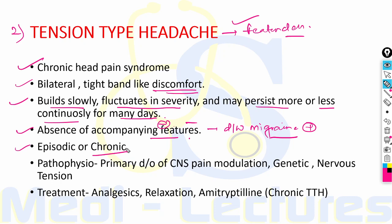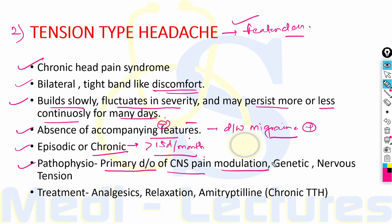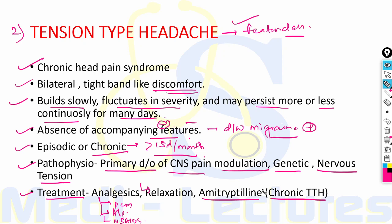Tension type headache can be episodic or chronic; chronic if present for more than 15 days per month. The pathophysiology is incompletely understood, but it is a primary disorder of CNS pain modulation alone, unlike migraine which has a more generalized disturbance of sensory modulation. It has some genetic contribution. Treatment involves basic analgesics like paracetamol, aspirin and other NSAIDs, behavioral approaches like relaxation, and for chronic tension type headache, amitriptyline is the only proven treatment.